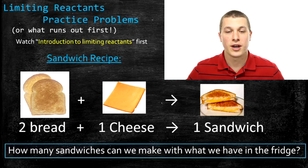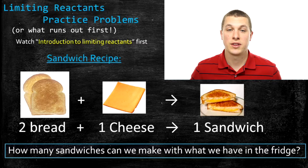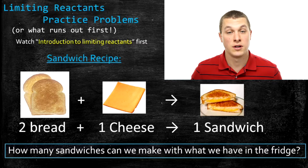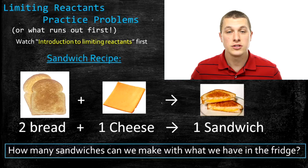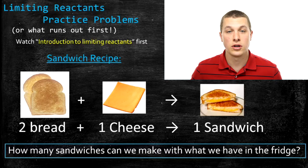In this episode of Real Chemistry, we're going to continue talking about limiting reactants by doing some practice problems. Remember, the idea in limiting reactants is we want to think about which ingredient in a recipe runs out first, and we also want to think about how much product we can actually make, which is something we call our theoretical yield. So let's take a look at a few more of those problems.